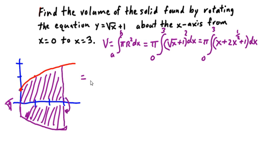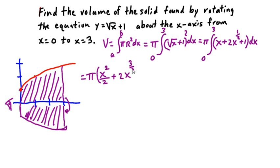Integrating, we're going to have pi times: the integral of x is x squared over 2. Plus 2 times x to the one-half integrates to x to the three-halves, divided by three-halves. Plus the integral of 1 is x. Evaluating from 0 to 3. Simplifying the middle term: dividing by three-halves is the same as multiplying by two-thirds, so 2 times two-thirds gives four-thirds x to the three-halves power. Plus x. Evaluating from 0 to 3.